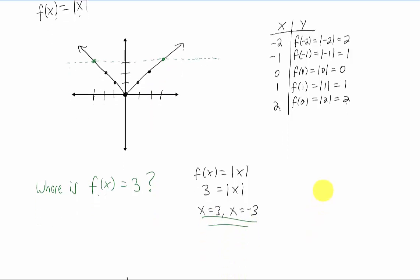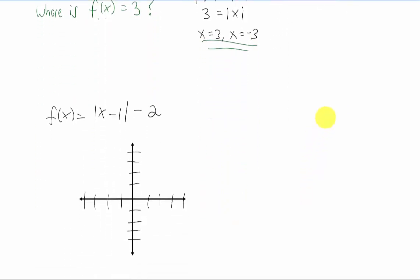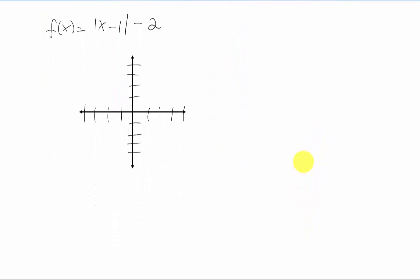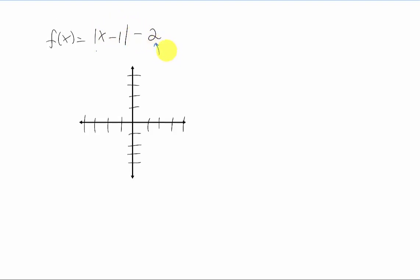We can shift this basic function up and down and left and right, and stretch or skew it. For example, the function |x − 1| − 2: the minus two shifts us down two, and the X minus one shifts us right one. So we shift right one and down two — that's where we have the vertex of our V — and the graph looks something like this from there.